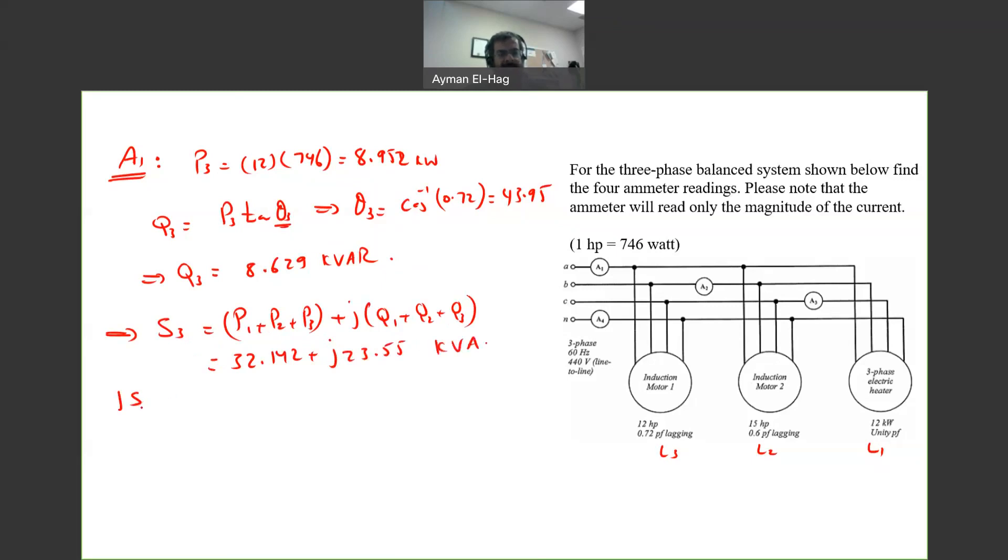From this we can find the magnitude of S3, which is 39.85 times 10 to the power 3, divided by root 3 times 440, which equals a current of 52.8 amps.